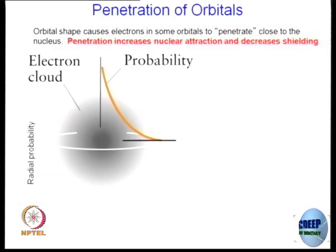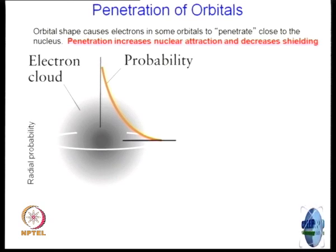How electrons are distributed outside the nucleus, or the probability of finding an electron, can be more clearly taught in a physical chemistry course. Here I will give you just a brief idea — it may not be an exactly clear picture, but it will give you an idea to go forward.